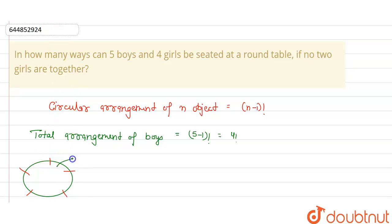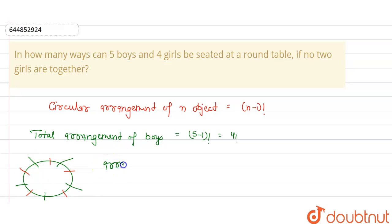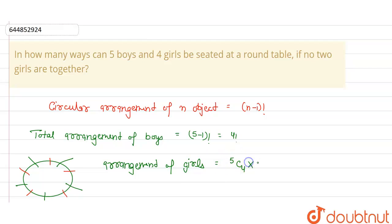In the circular arrangement, five boys sit at positions one, two, three, four, five. In between them, girls will sit — there are five gaps: one, two, three, four, five. So for the girls we have five choices.